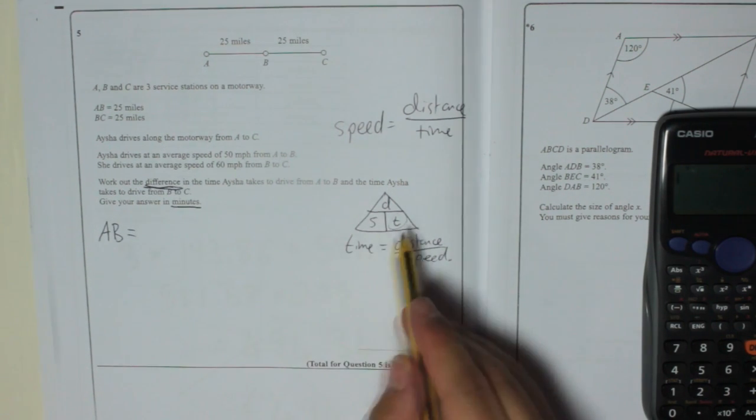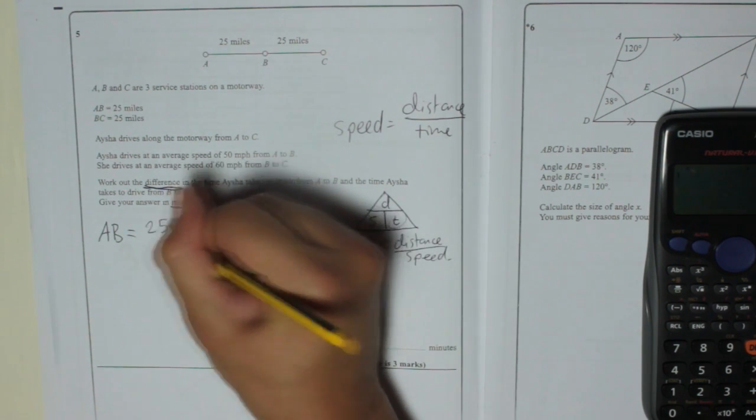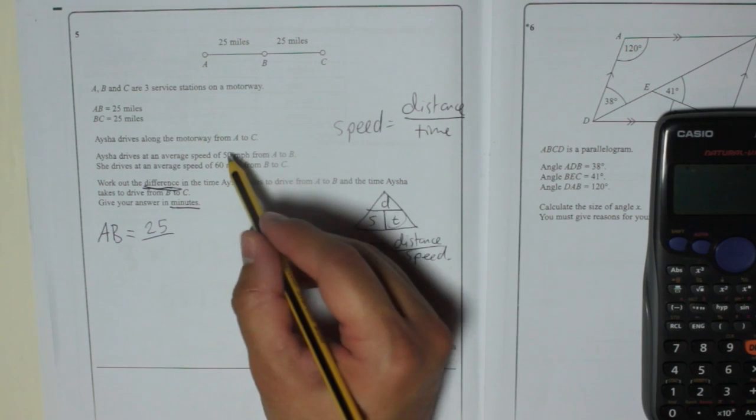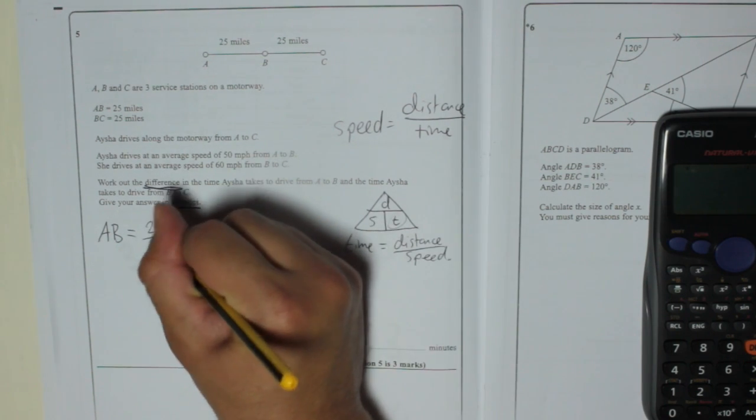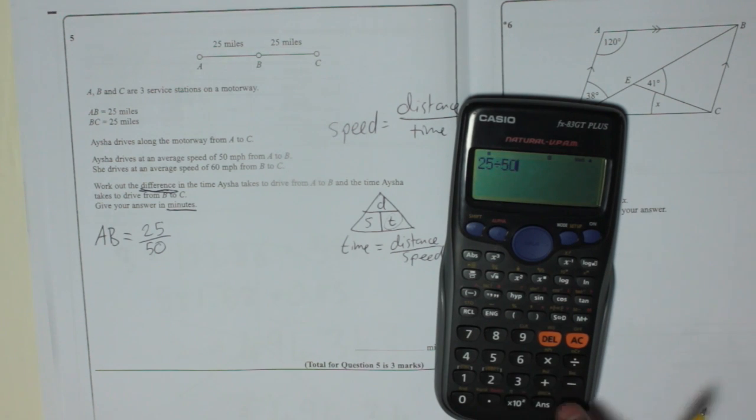...equals time equals distance 25 divided by speed 50. 25 divided by 50 is half an hour, which is 30 minutes.